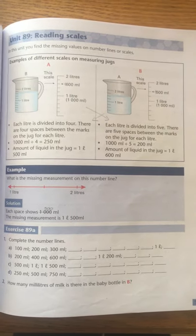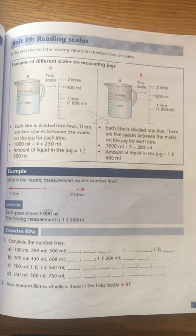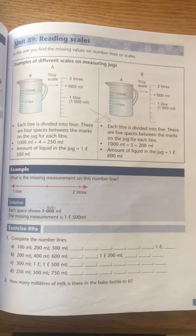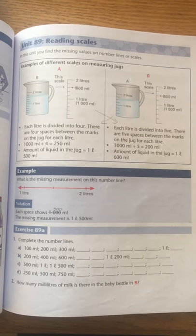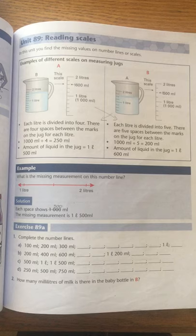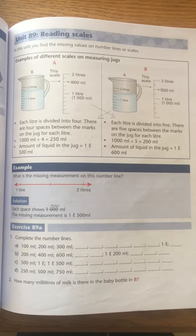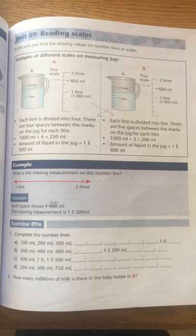Hi grade fours! Today we are doing unit 89 reading scales on page 155. Now reading off an amount in milliliters or liters off of a jug or any other kind of container is exactly like reading off a measurement on a ruler or a measuring tape.